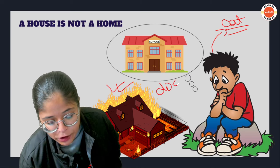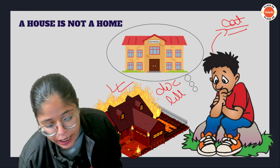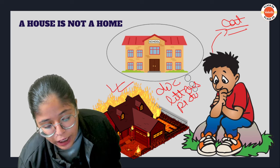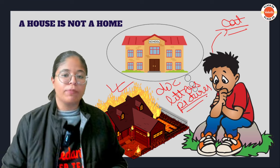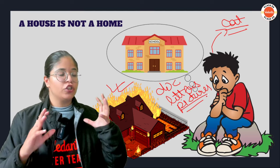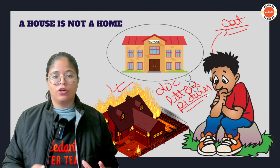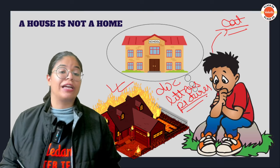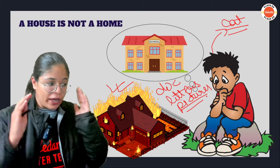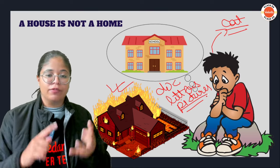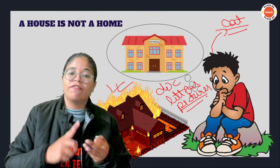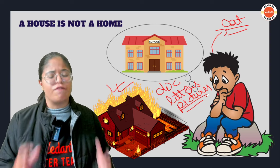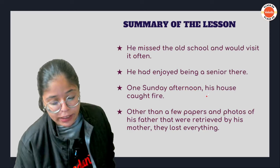While doing homework, a fire breaks out in his house and almost nothing is saved. His mom manages to save only a few documents, some letters from his dad, and some pictures. Everything else is destroyed. When he sees the whole scenario he is shocked. After the fire is over, he realizes his cat is also missing — his one last source of comfort is also gone.